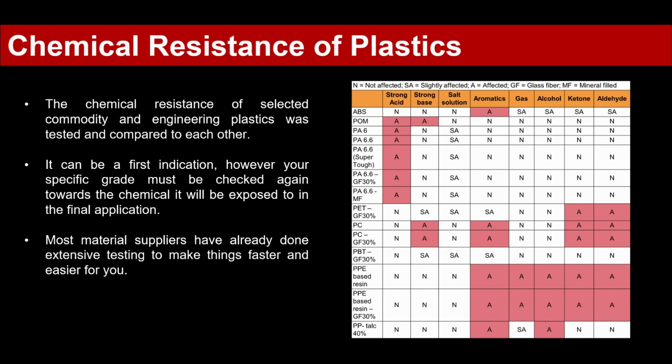Commodity plastics like polypropylene also have a good all-round chemical resistance. The categories evaluated are always: strong acid, strong base, some salt, aromatics, gas, alcohol, ketones, and aldehydes. With that you get a really good feeling for the material's resistance profile.